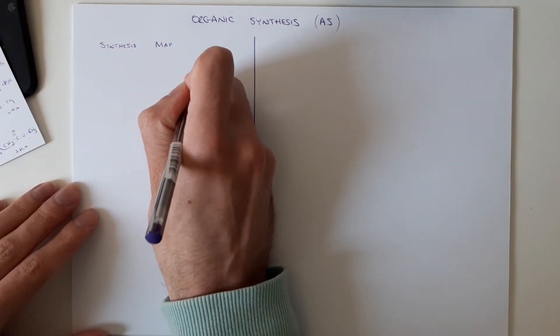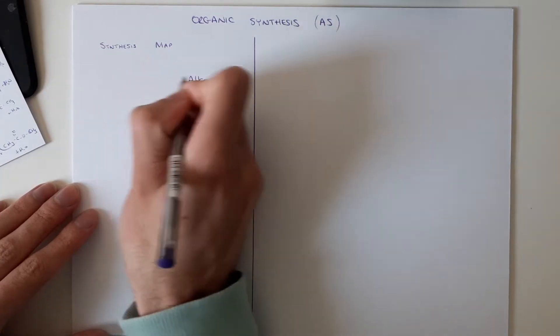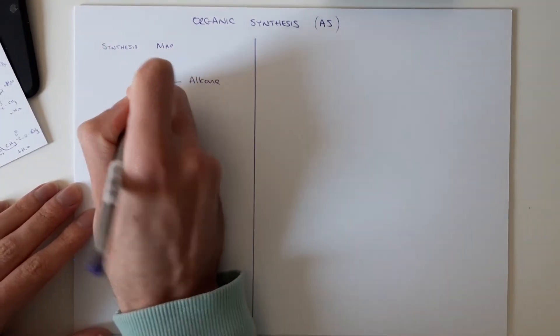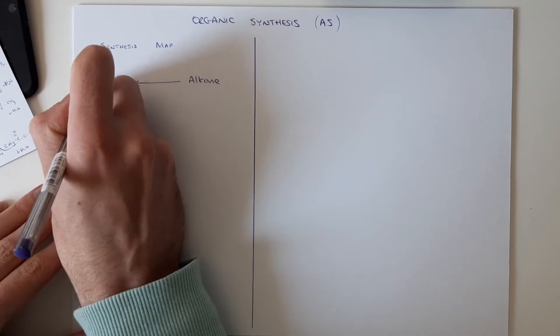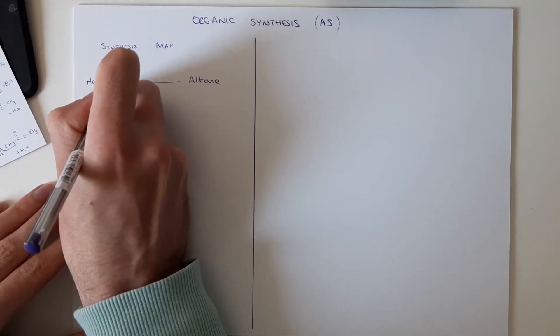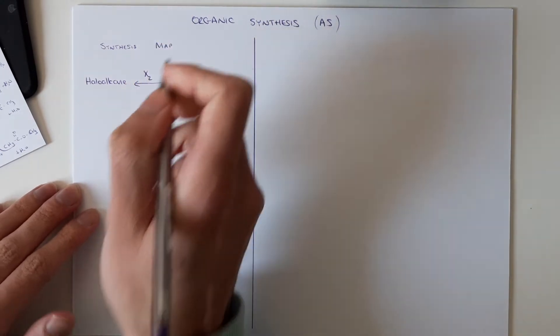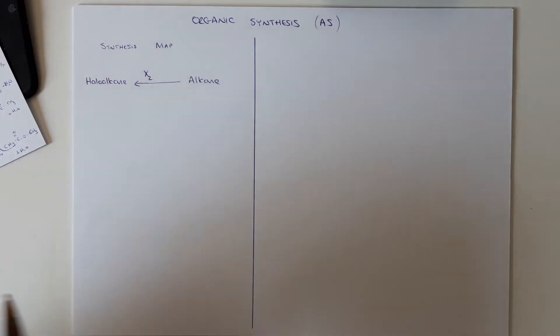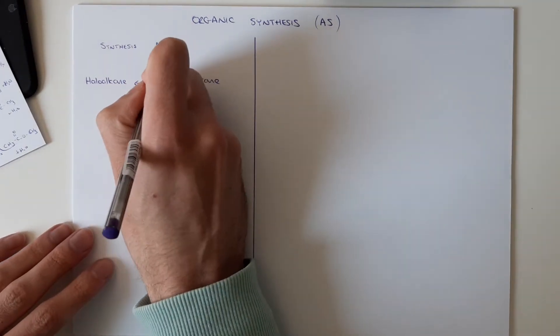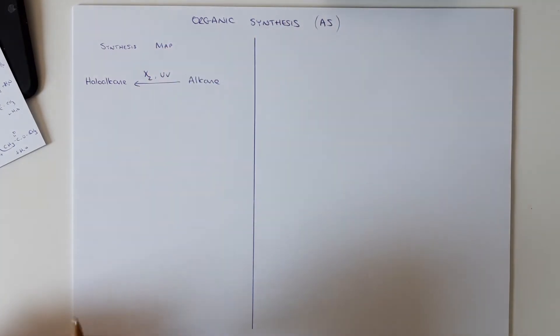So I'm going to start on the top right hand corner with alkanes and I'm going to go from alkanes to haloalkanes. And to do that I need an alkane, so I'm going to call that X2, Cl2, Br2, all those and UV light as well.